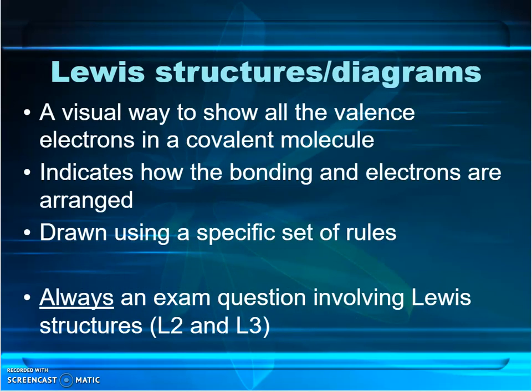Lewis diagrams are a way to show how the bonding in a molecule actually works, and there is a specific set of rules we use to draw them. They show how the atoms are connected to each other — is there one pair of electrons shared between two atoms, or two pairs? Does it make a single bond or a double bond? That's what our Lewis diagram shows us.